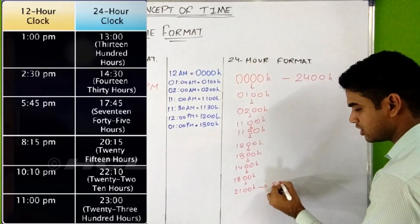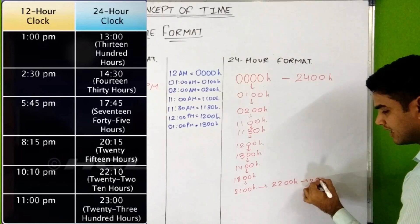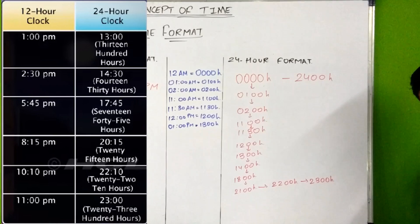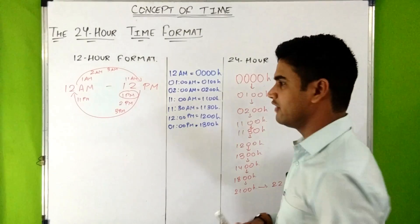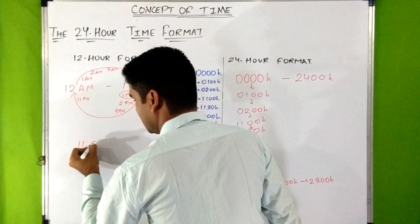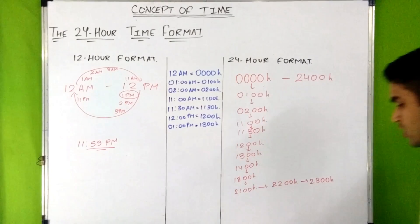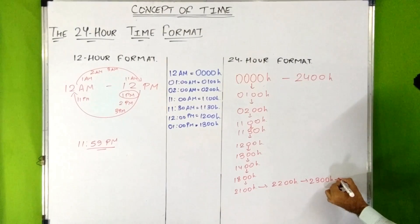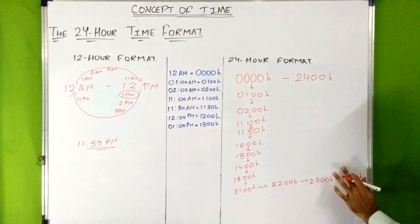Continuing: 10 PM is written as 2200 hours, and 11 PM is written as 2300 hours. Now, if it is 11:59 PM in 12-hour format — the last minute of the day — then in 24-hour format it is written as 2359 hours.